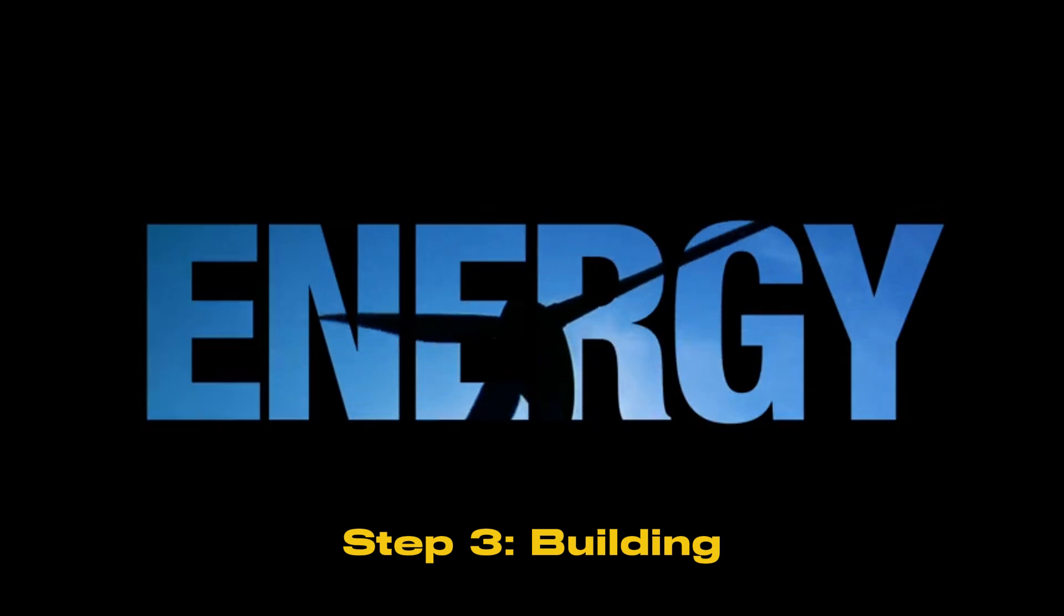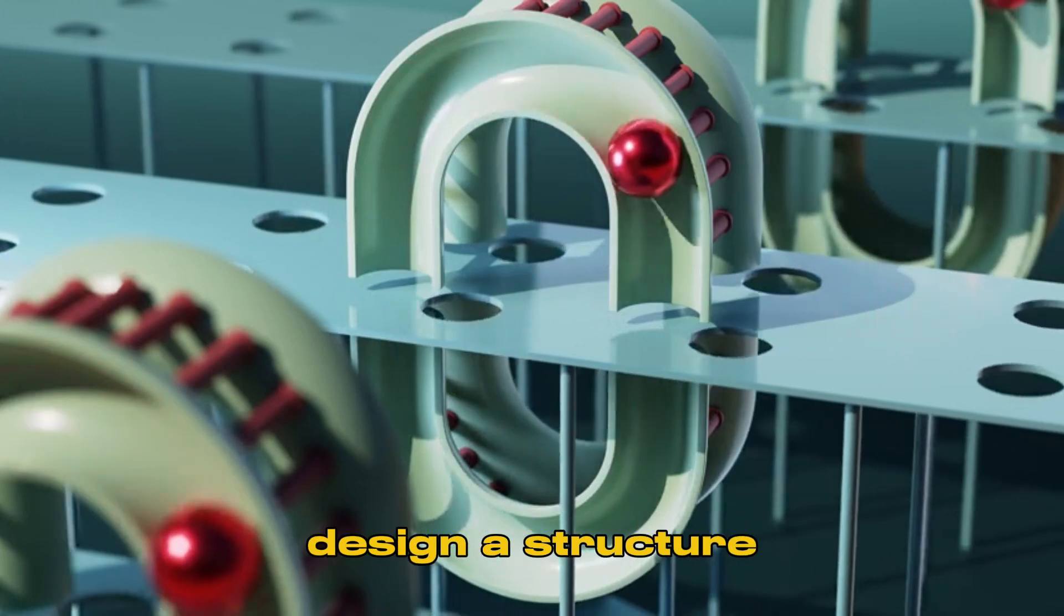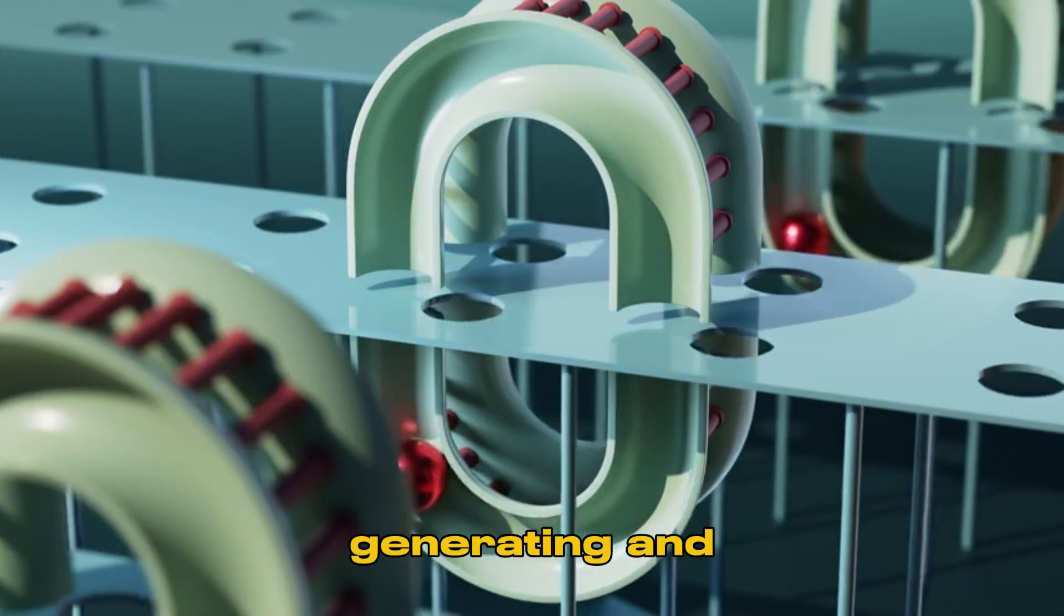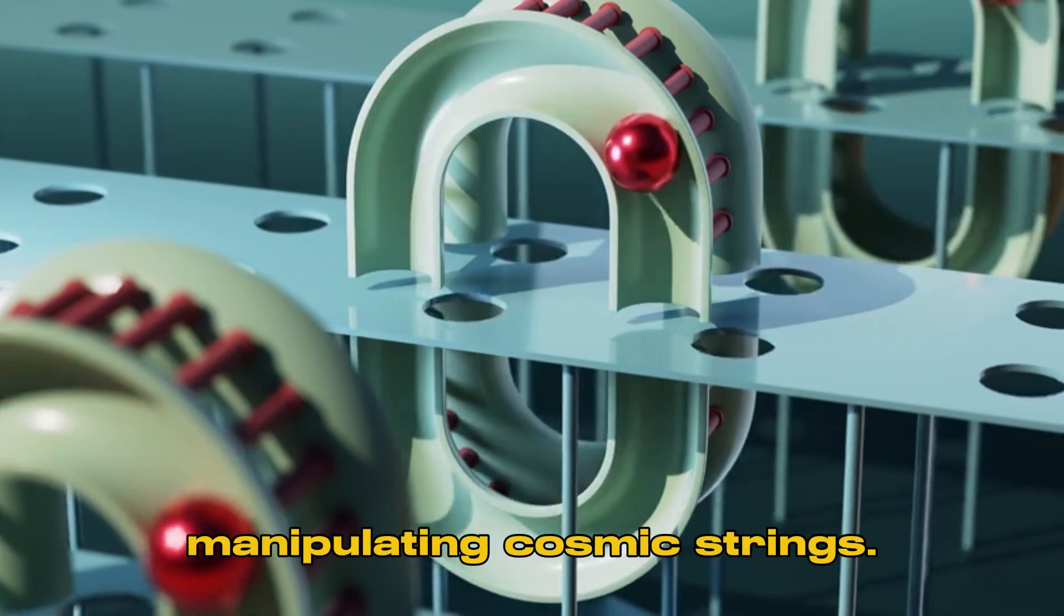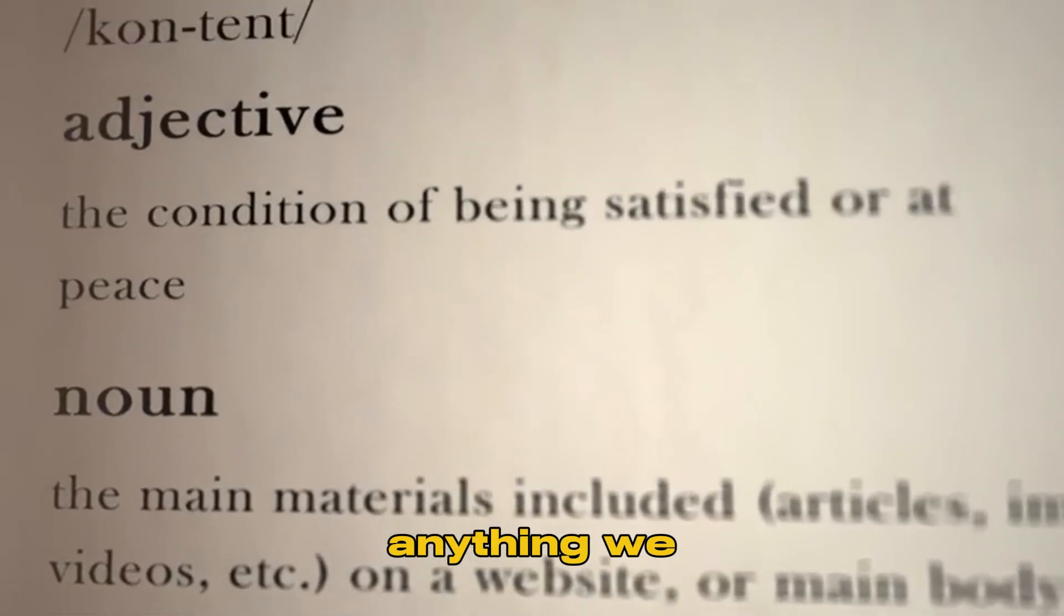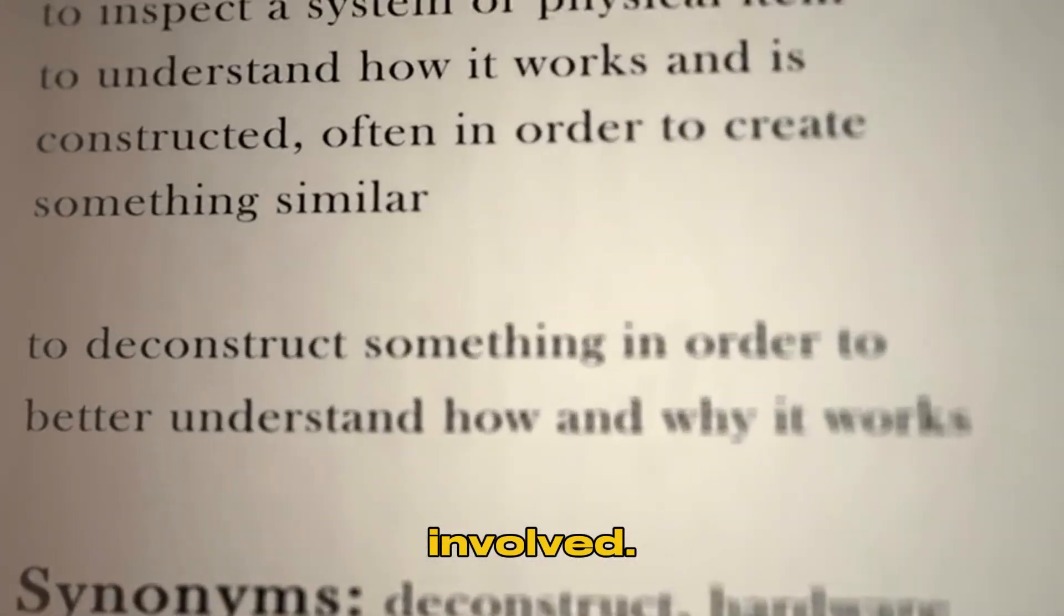Step 3: Building the machine. In this hypothetical scenario, we design a structure capable of generating and stabilizing a wormhole, or manipulating cosmic strings. This would involve advanced materials. We would need materials far beyond anything we currently have to withstand the forces involved.